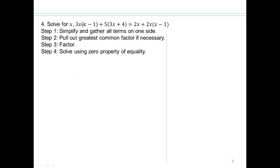All right, let's take a look then. So 3x times x is 3x². 3x times negative 1 is negative 3x. 5 times 3x is 15x. 5 times 4 is plus 20. On the other side, we have 2x. 2x times x is 2x². 2x times negative 1 is negative 2x. Simplify. 3x² - negative 3x plus 15x is 12x plus 20. 2x minus 2x will add together and give you zero, so you're left with 2x².